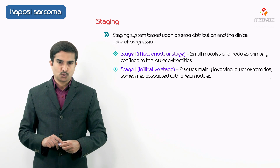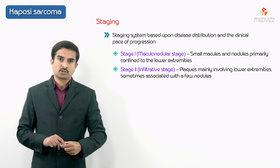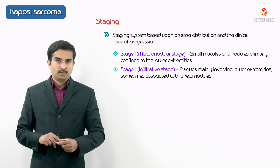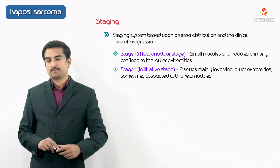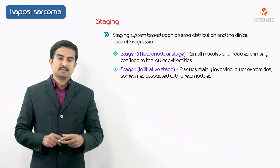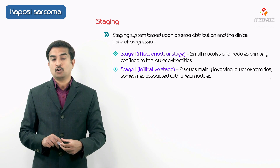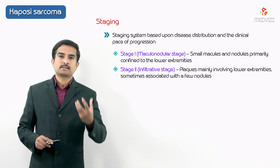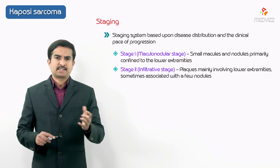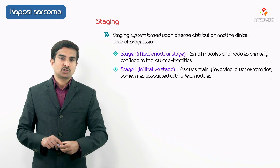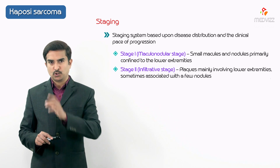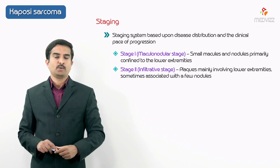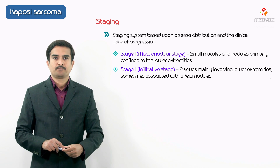Stage 2 is called the infiltrative stage. In this stage, one can mainly find plaques. Like the macules and nodules of stage 1, these plaques are mainly involving the distal part of the lower extremities, though they are sometimes associated with a few smaller nodules. Because of the predominance of plaques, stage 2 is also called the plaque stage.